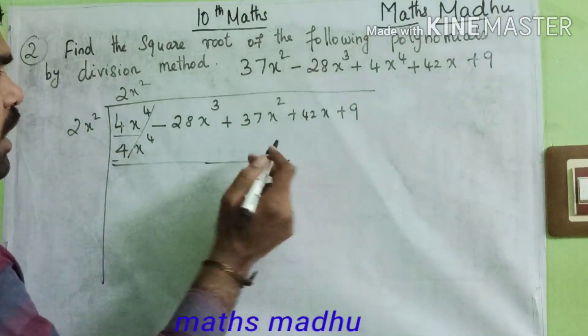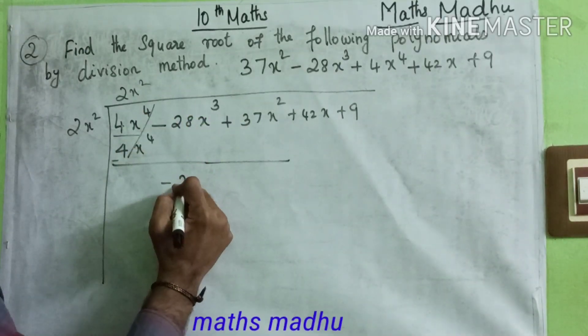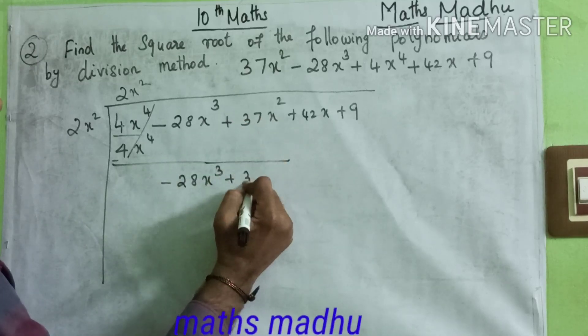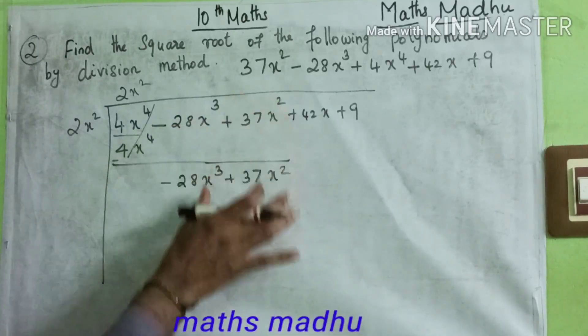So next is 2 variable number. So what is in the two variables? Minus 28x³ plus 37x².